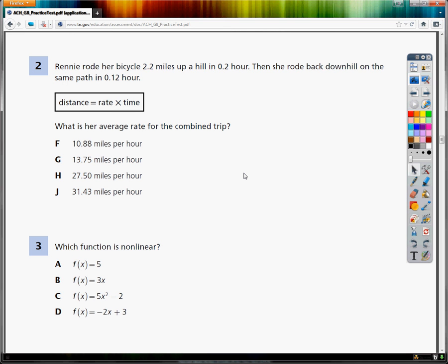And the equation they give us, which was kind of nice of them, is that distance equals rate times time. What is the average rate for her combined trip? Now, there's kind of a weird way that you can go about this and get yourself all kind of lost, or